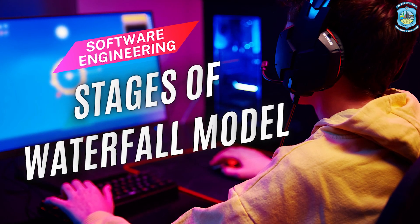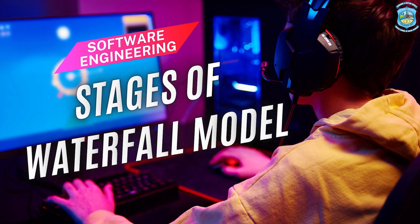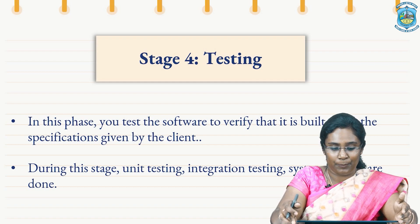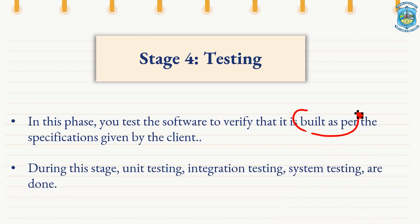The next important stage is the build stage. After the designing, it is now time to build the software — here comes the coding part. Whatever programming language was decided in the previous stage will be implemented here. After coding, it is time to test the software to verify whether it meets the requirements of the client. In this phase, you test the software to verify it is built as per the specifications given by the client. During this stage, three important tests take place: unit testing, integration testing, and system testing.